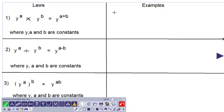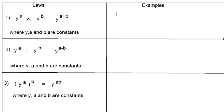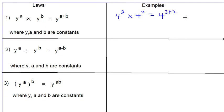Let's look at an example. 4 to the power 3 multiplied by 4 to the power 2 would then be equal to 4 to the power 3 plus 2, which is 4 to the power 5.